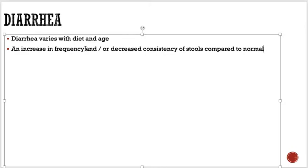Everyone has a different normal — some people go three times every day, some go once a day. In infants, whenever there is any increase in stool frequency to twice as often per day, and in older children when they have more than three stools every day, we call that diarrhea.